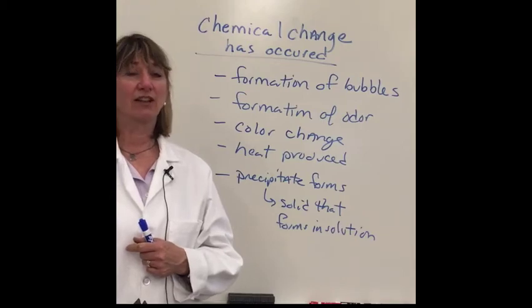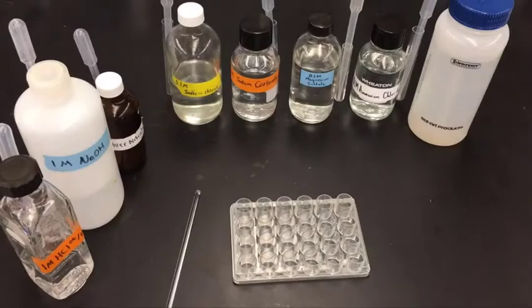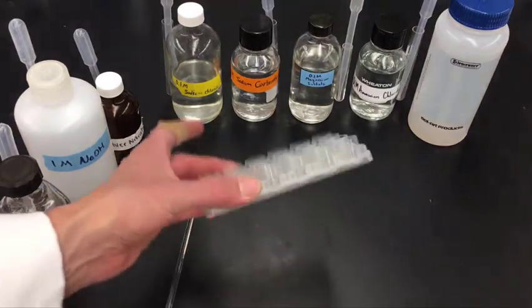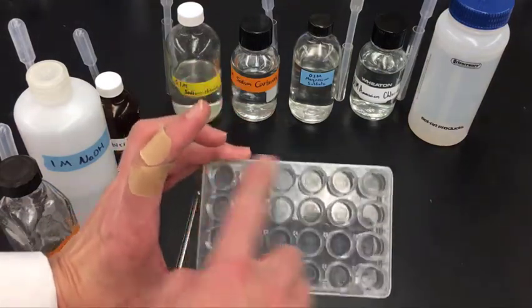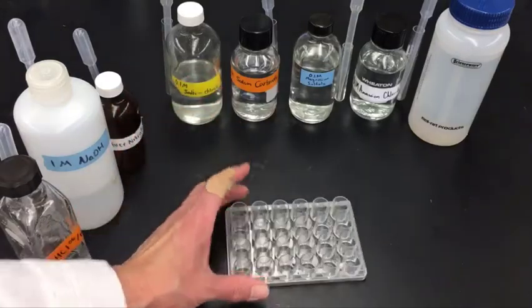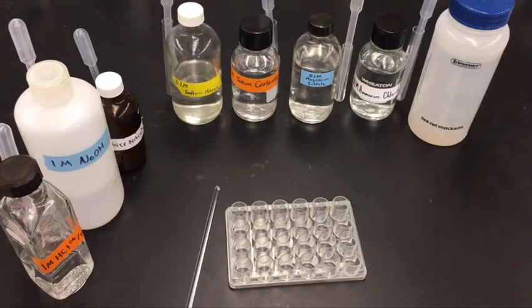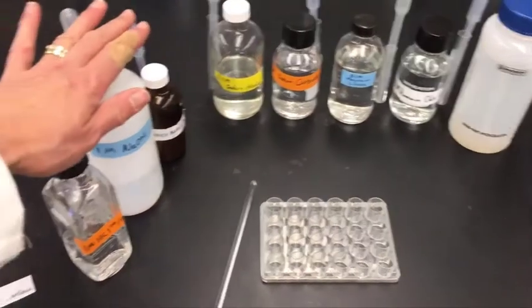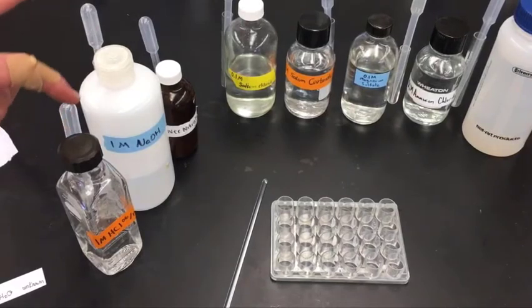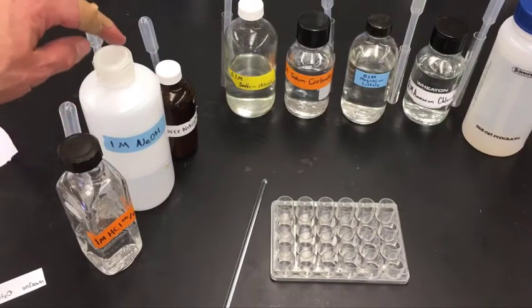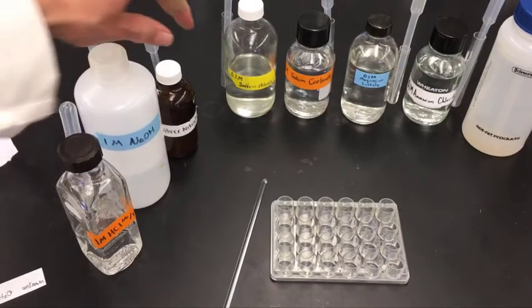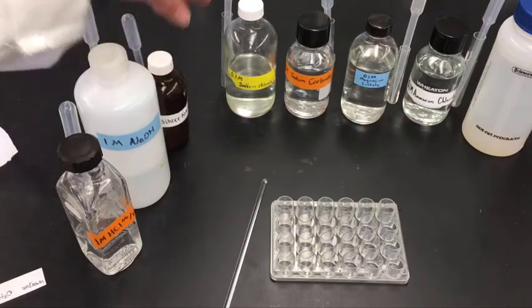So let's get to look at the lab setup. This week's experiment is going to be the identification of a compound using chemical properties. The equipment we're going to need today is a well plate — this one is six by four and works really well — and a stirring rod so we can stir solutions. We're also going to need various reagents: one molar hydrochloric acid, one molar sodium hydroxide, and 0.1 molar silver nitrate.